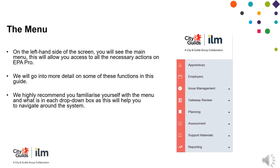On the left-hand side of the screen, you will see the main menu. This will allow you access to all the necessary actions on EPA Pro. We will go into more detail of some of these functions in this guide. We highly recommend that you familiarise yourself with the menu and what is in each drop-down box, as this will help you to navigate around the system.